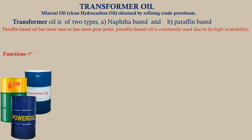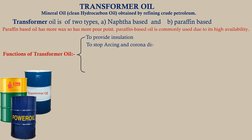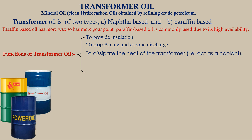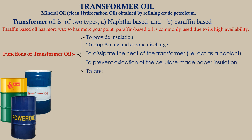Functions of transformer oil: to provide insulation; to stop arcing and corona discharge; to dissipate the heat of the transformer, i.e., act as a coolant; to prevent oxidation of the cellulose-made paper insulation; and to preserve the transformer core and windings.